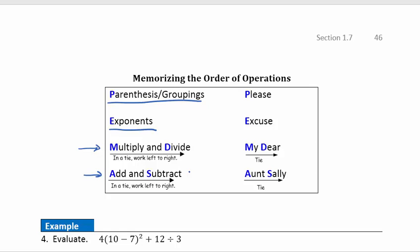To memorize the order of operations, we use the saying 'Please Excuse My Dear Aunt Sally' — P for parentheses, E for exponents, M/D for multiply and divide, A/S for add and subtract. The key caution: multiplication and division are a tie, as are addition and subtraction, so you work left to right within each pair and can't follow the saying exactly.